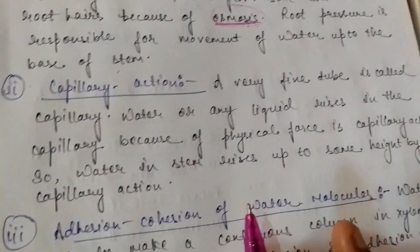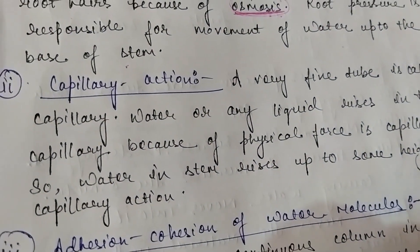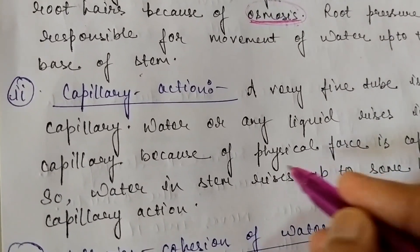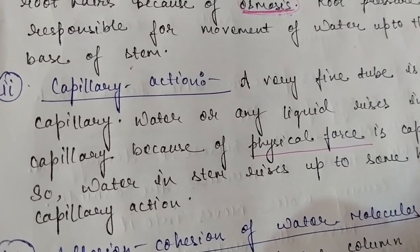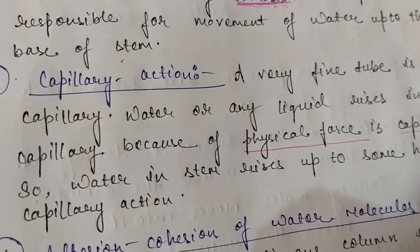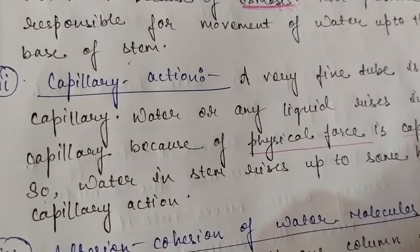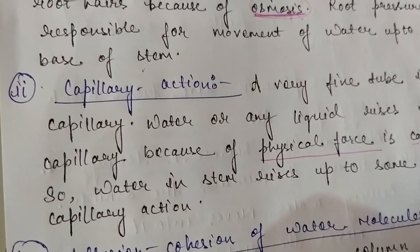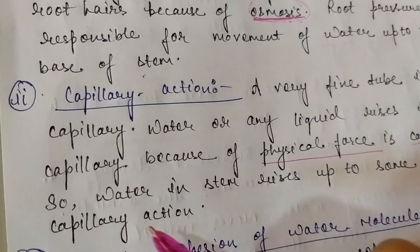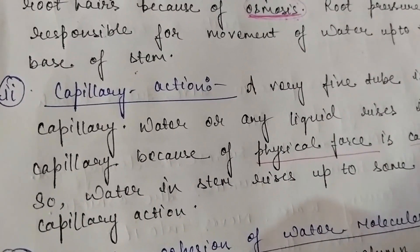After that comes capillary action. In capillary action, a very thin fine tube is called a capillary. This happens because of physical force — that force is called capillary action. Inside the plants, there are tracheids which, if forming a continuous tube, create a very fine tube. Inside that fine tube, the liquid — which is water — undergoes capillary action. So due to the physical force inside, the water rises up to some height through capillary action and reaches different heights.